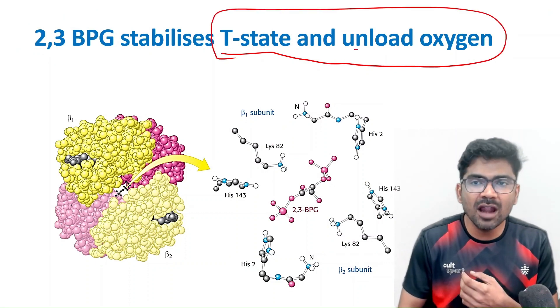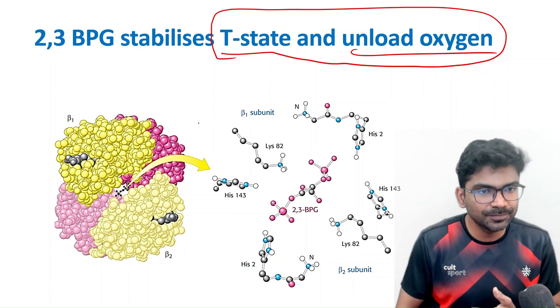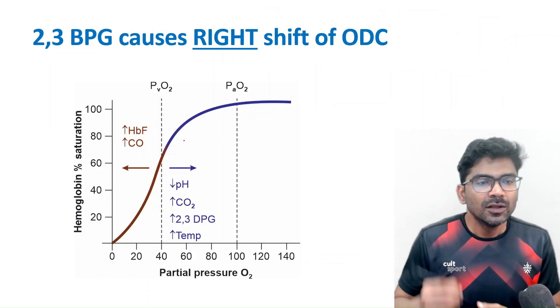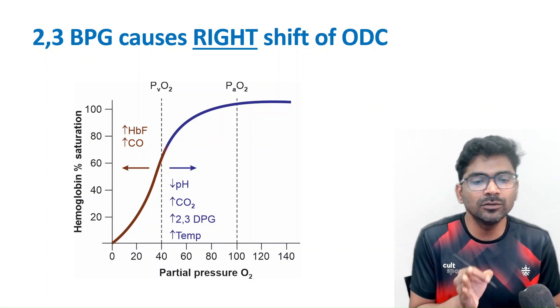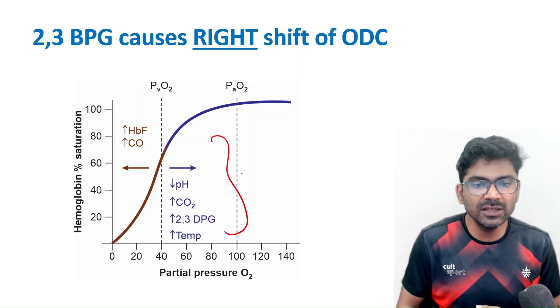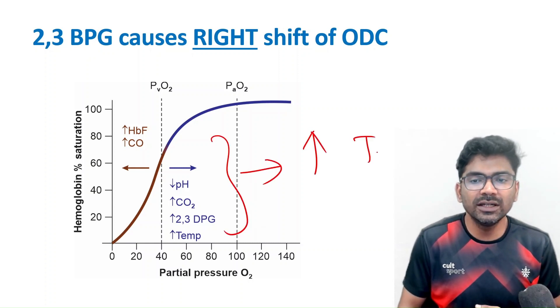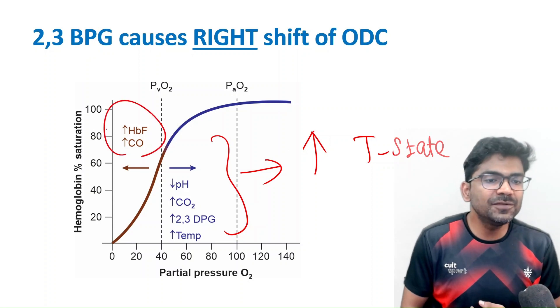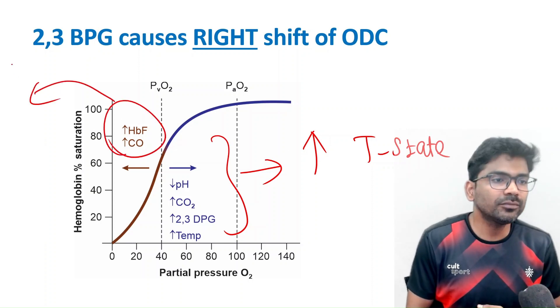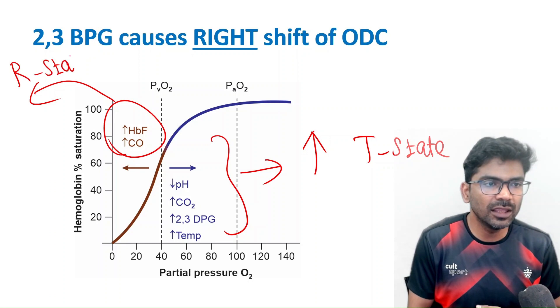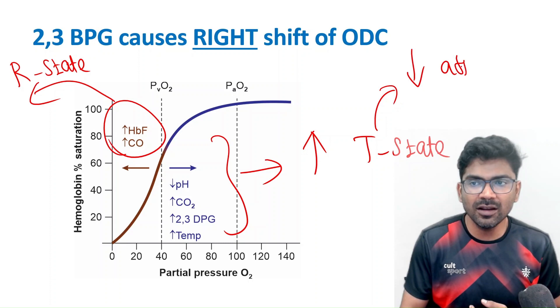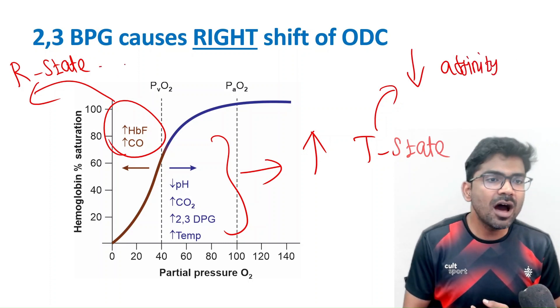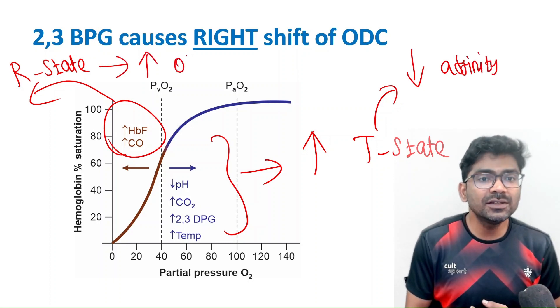Why should we unload? Then only tissues can take oxygen. So allosteric proteins can exist in R and T state. 2,3-BPG stabilizes the T state. I hope you have understood the concept of T state stabilization. So 2,3-BPG unloads oxygen. That is why 2,3-BPG shifts the oxygen dissociation curve to the right side. Right side means more of T state hemoglobin. T state means decreased affinity for oxygen. R state means increased affinity for oxygen.